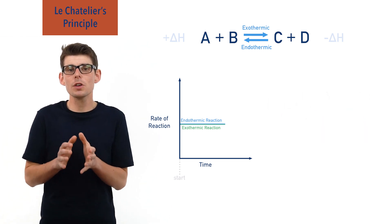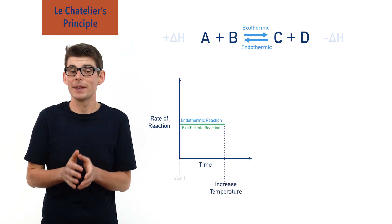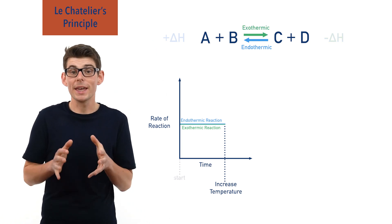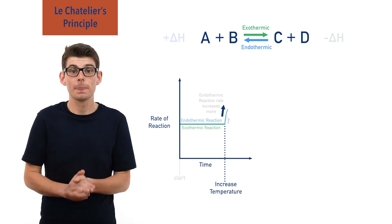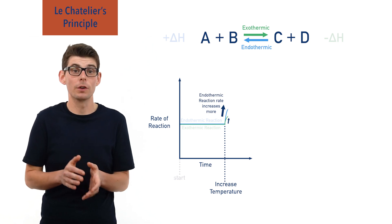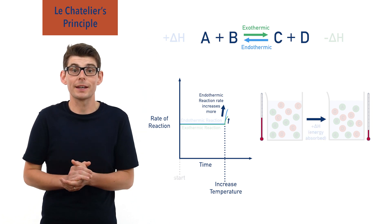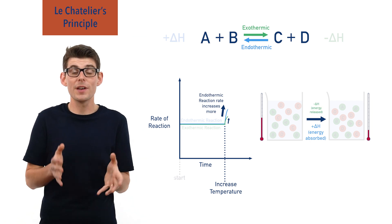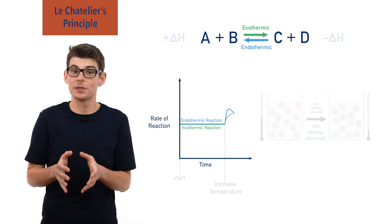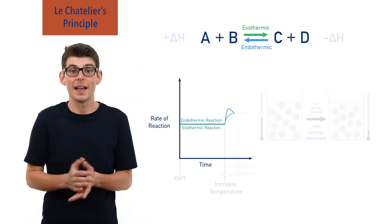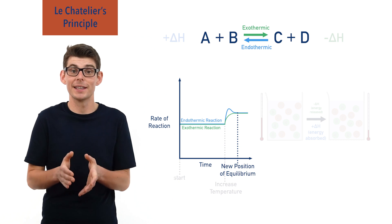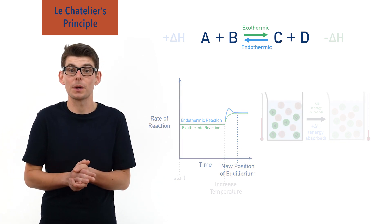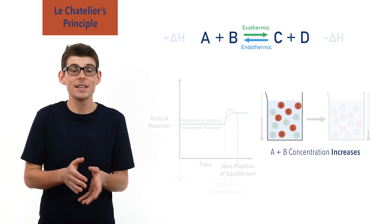If, however, the temperature of the system is increased, the rates of the exothermic and endothermic reactions will be affected differently. The endothermic reaction rate will increase more than the exothermic reaction rate does. This will lead to an overall decrease in the temperature of the system, as more energy will be absorbed by reacting particles than will be released in the same amount of time. The rates of both reactions will eventually become the same again as the endothermic reaction starts to slow down and a new dynamic equilibrium is reached. However, to get there, more of the endothermic reaction has had to happen compared to the exothermic reaction, and the concentration of products from the endothermic reaction will increase, and the concentration of reactants decrease as a result.